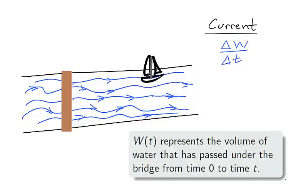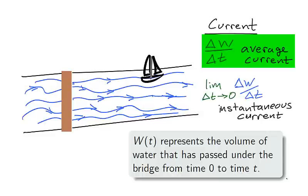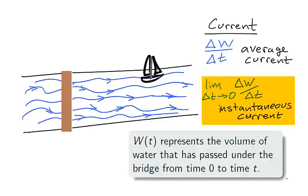The current of the stream is the rate at which the flow changes with respect to time t, that is the change in volume with respect to change in time. We can discuss the average current just as we do average rate of change, and we can discuss the instantaneous current as the limit of the average current. To summarize, the derivative of flow is current, just as the derivative of position is velocity.